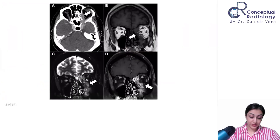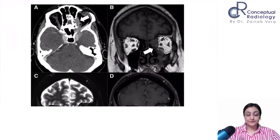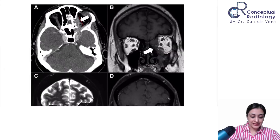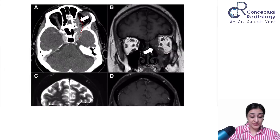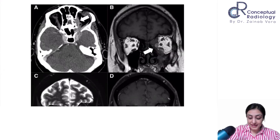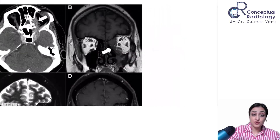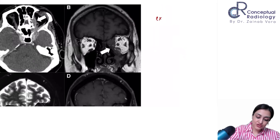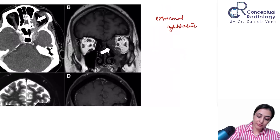Next case: the arrow shows a mass involving the orbital apex, presenting as orbital apex syndrome. This is orbital pseudotumor — extraconal infiltrative soft tissue involving the orbital apex and extending into the cavernous sinus.